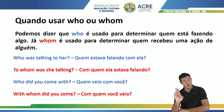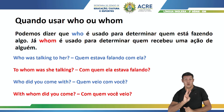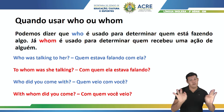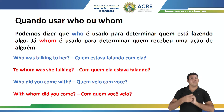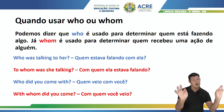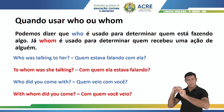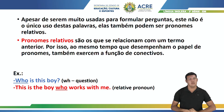Vamos falar sobre a diferença do who e do whom. Podemos dizer que o who é usado para determinar quem está fazendo algo. Já o whom é usado para determinar quem recebeu uma ação de alguém. Por exemplo: who was talking to her? Quem estava falando com ela? E: to whom was she talking? Com quem ela estava falando? No segundo caso, alguém recebeu a ação.